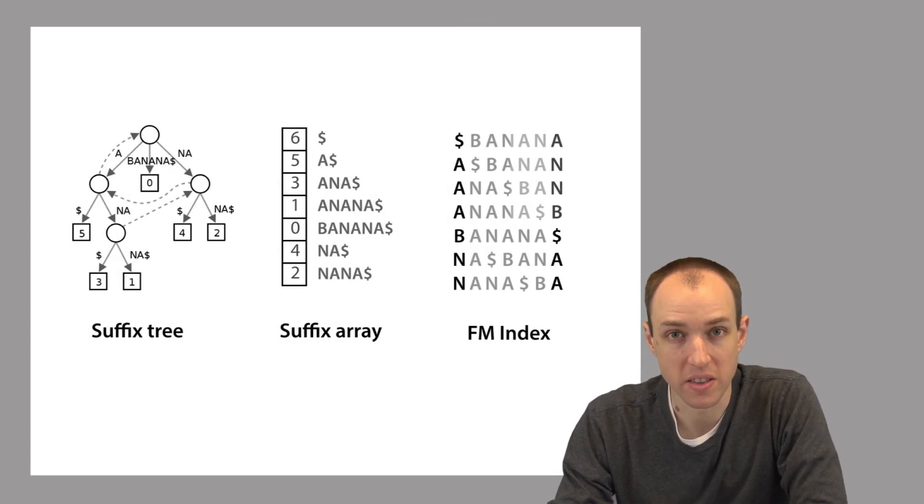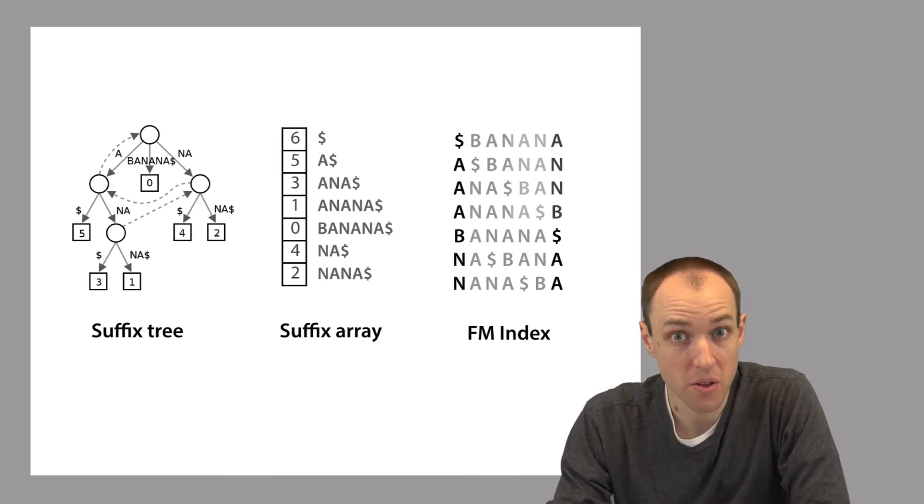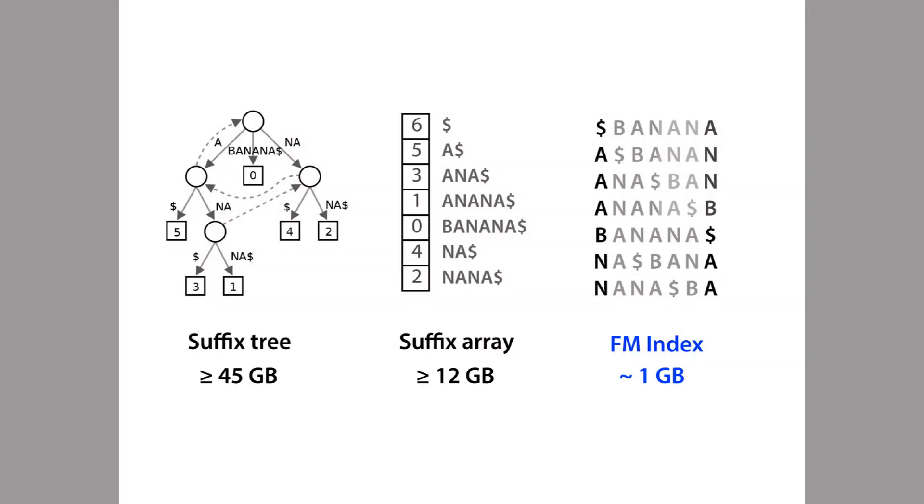Another popular kind of suffix index is called the FM index, which is shown on the right here. The FM index is based on another idea called the Burrows-Wheeler transform or the BWT. And the Burrows-Wheeler transform was originally developed for compression. But it so happens that it's also used to build a specific kind of suffix index, the FM index. And this index is very, very compact. So to give an idea about how large these three data structures are, let's consider the question of if we used each of them to build an index of the entire human reference genome, which again is about three billion letters long, then how large would that data structure be? How much room would it take up on your computer?